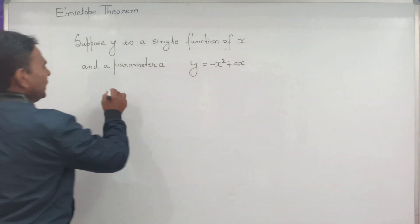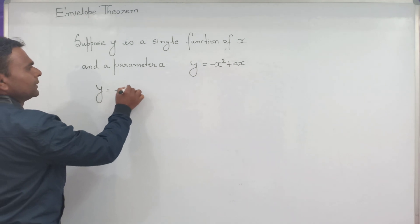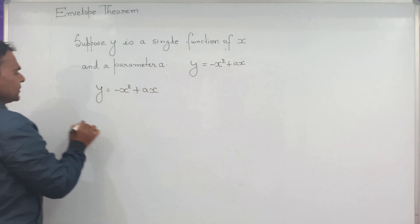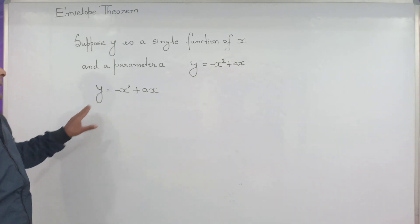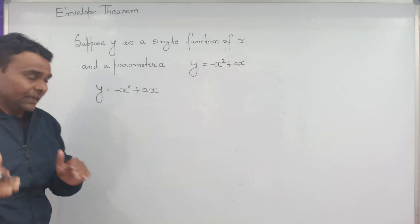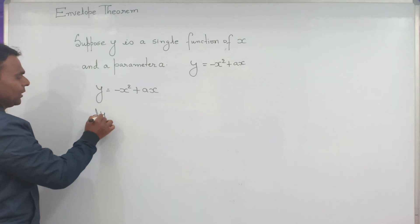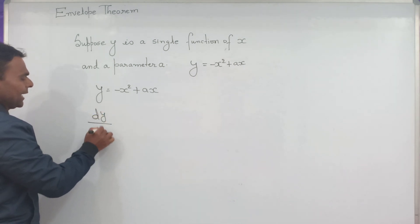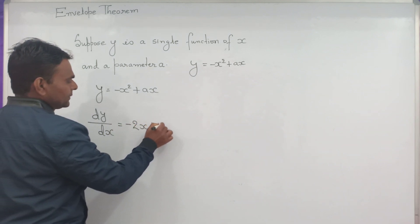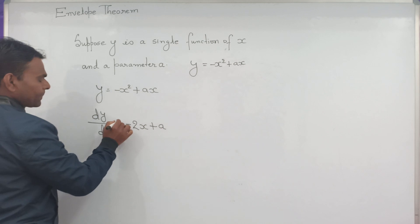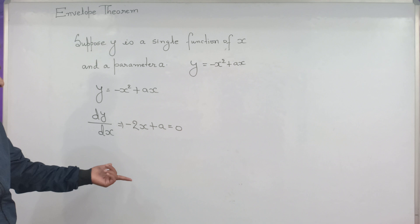Very simple. y equals minus x squared plus ax. What is the relationship between the variable x and parameter A? First, the slope of y — we need to take the derivative of y with respect to x: dy/dx equals minus 2x plus a. Setting equal to zero, solve for x.